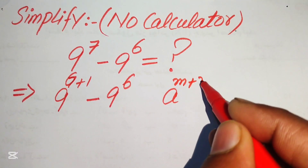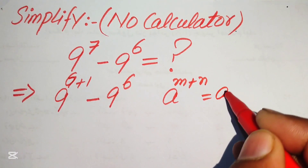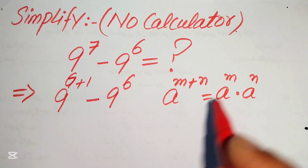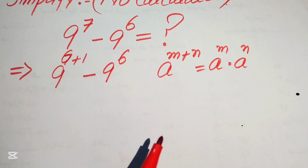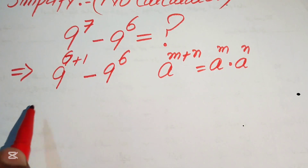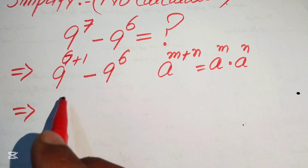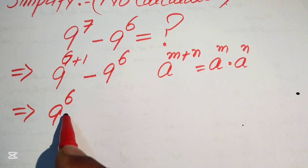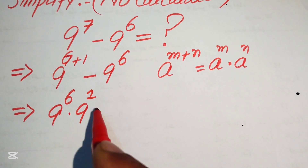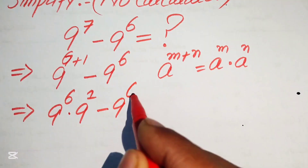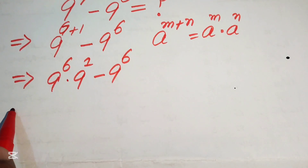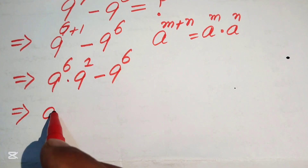You know that if you have a to the power of m plus n, it equals a to the power of m multiplied by a to the power of n. According to this exponent law, we break the exponent of these two terms, and it is written as 9 to the power of 6 multiplied by 9 to the power of 1, minus 9 to the power of 6.